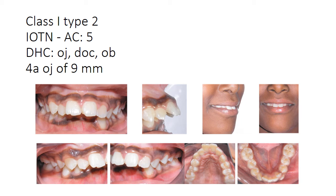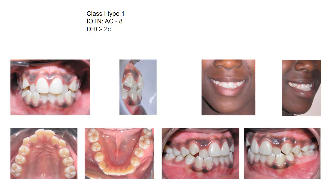We give the score of 4A because there is an overjet of 9 millimeters. That's how you use the dental health component of the IOTN index — whichever condition comes first should be given the grade.